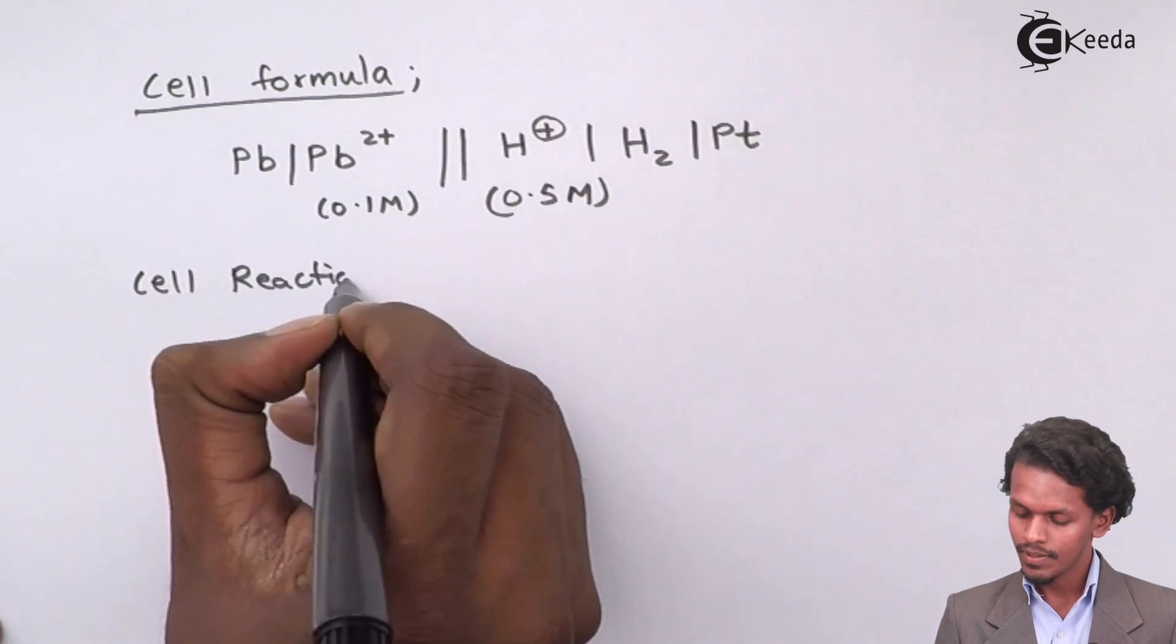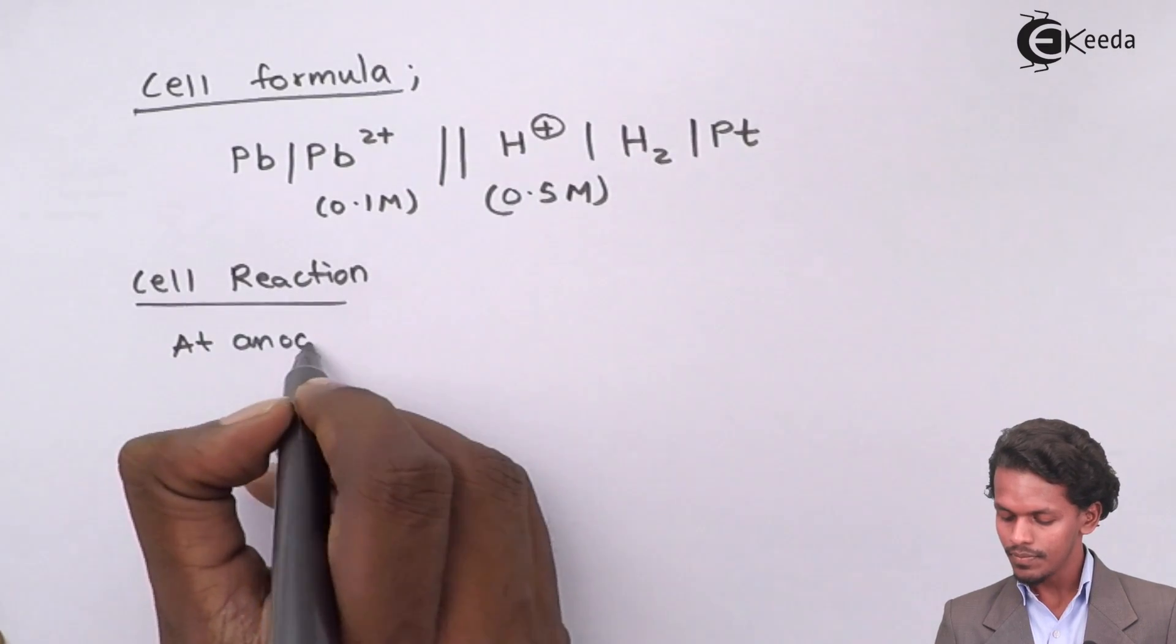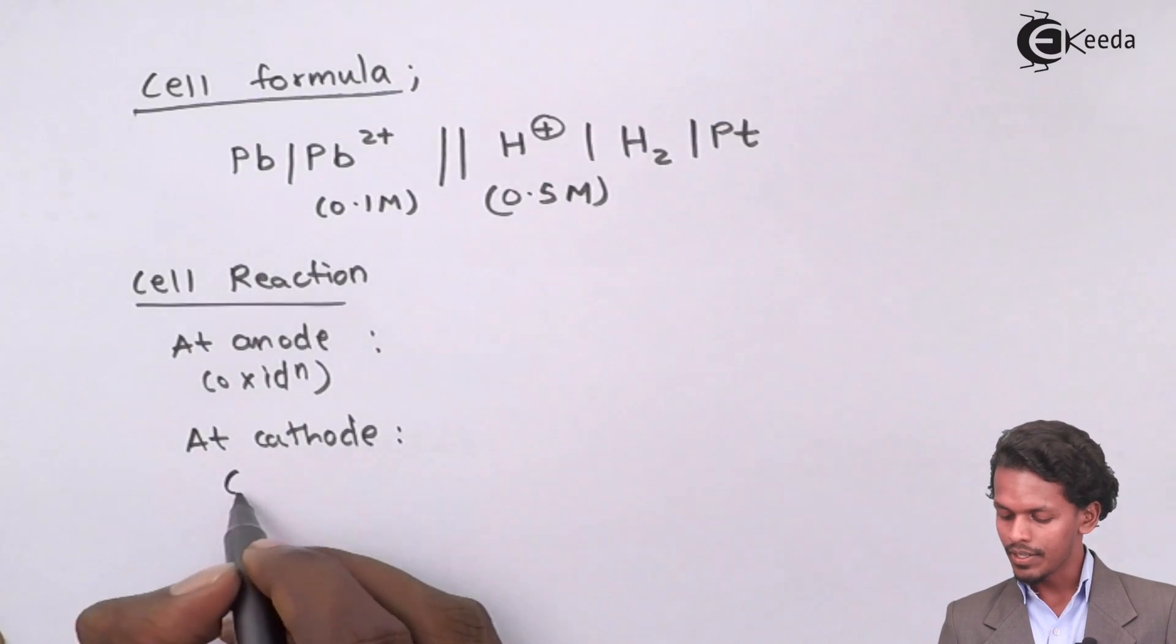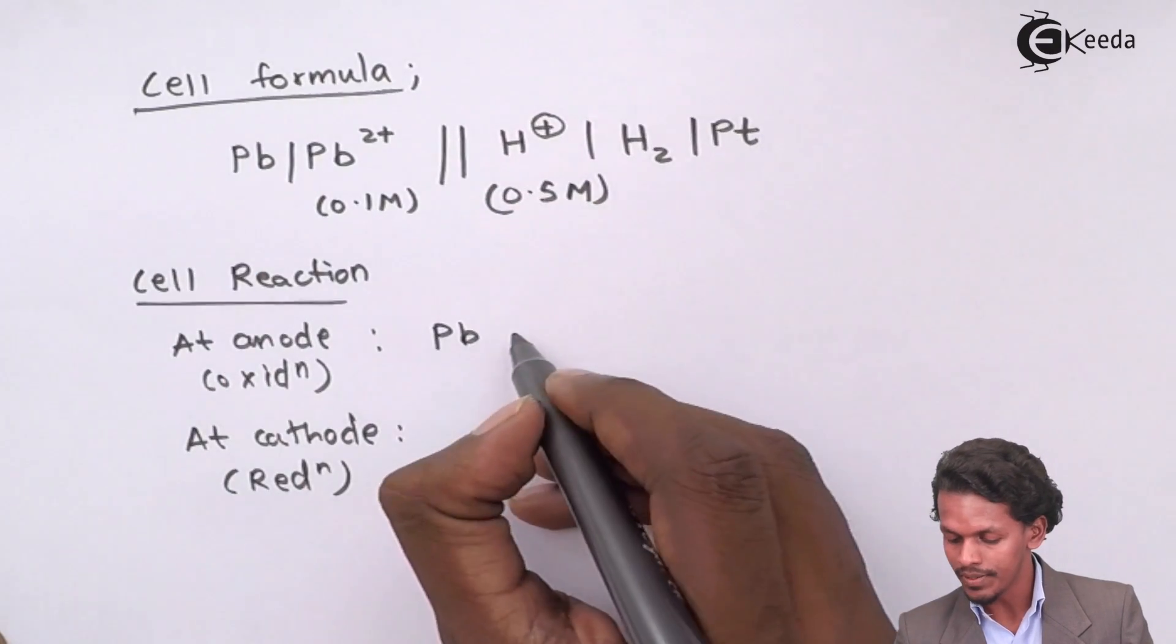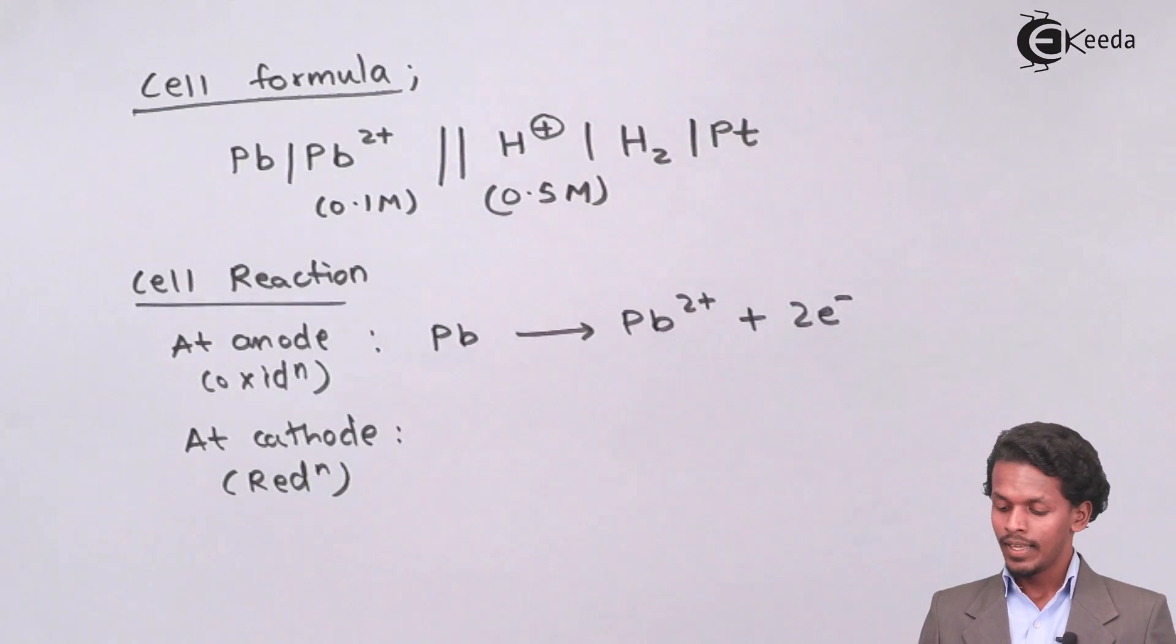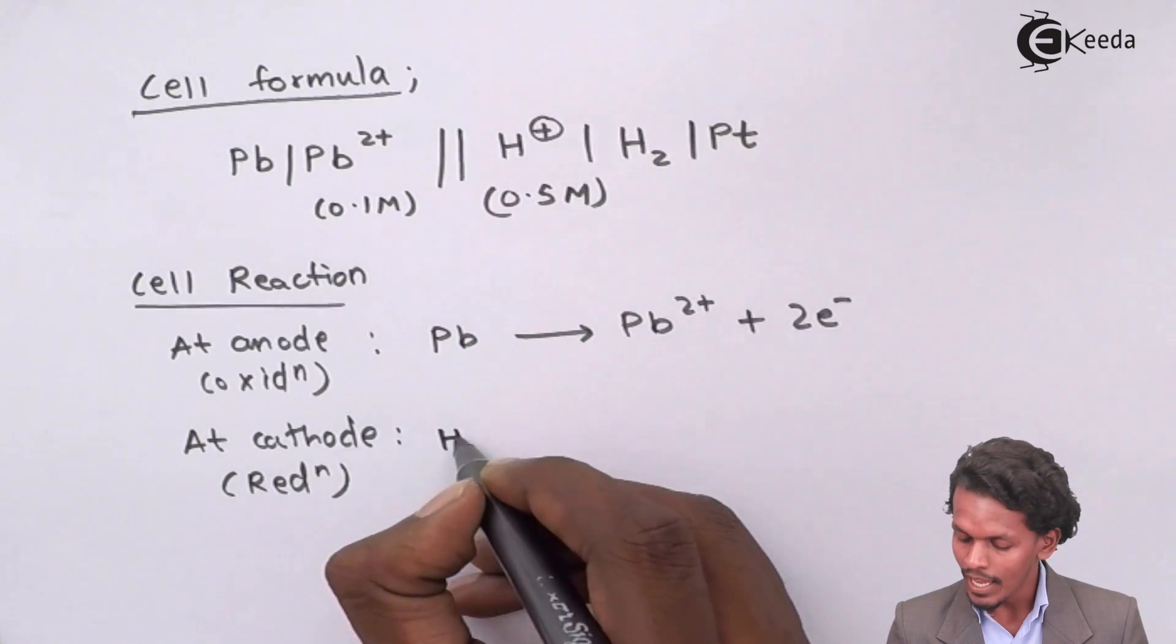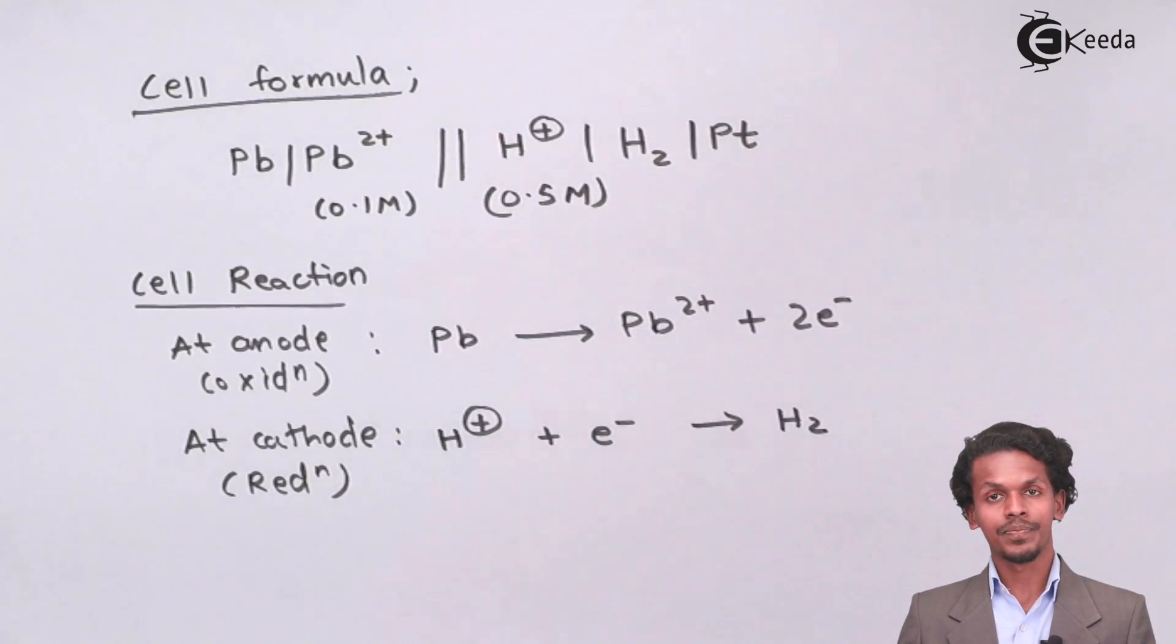The cell reaction can be written as: since Pb is acting like an anode, at anode oxidation occurs and at cathode reduction occurs. At anode, Pb is converted into Pb2 plus by removing two electrons.